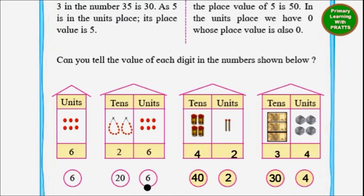So we will write 26. Next: there are 4 bundles of 10, so we write 4, and the place value is 4 into 10, which equals 40. Then 2 units — 2 into 1 equals 2 — giving us 42. Next: there are 3 tens — 3 into 10 equals 30 — and 4 units — 4 into 1 equals 4.